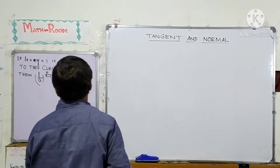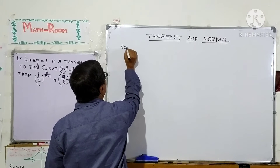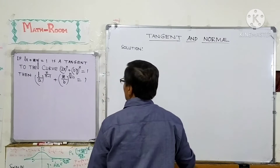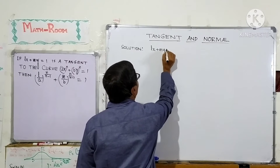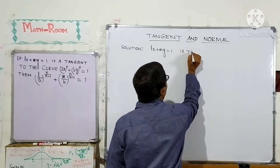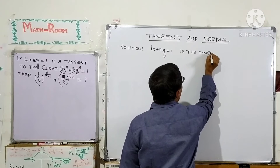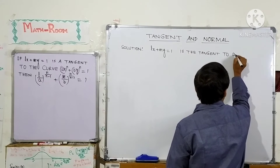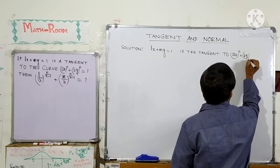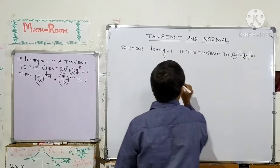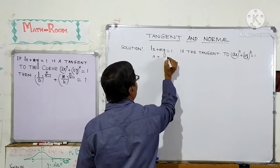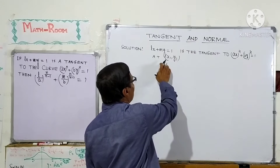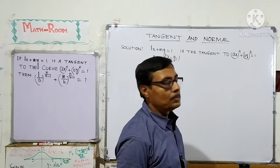Let us start. Here, Lx plus my equals 1 is the tangent to Ax to the power n plus By to the power n equals 1 at the point x1, y1. This is the point of contact of this tangent line to the curve — at this point, this line is tangent to the curve.